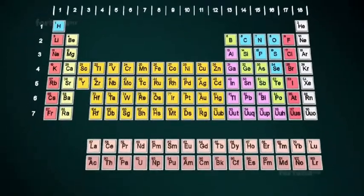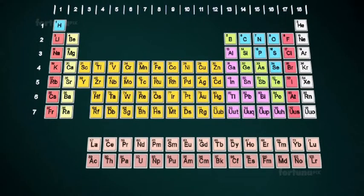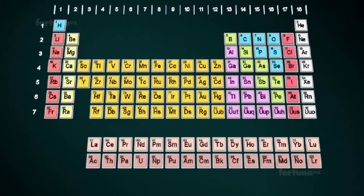The periodic table is a tabular arrangement of all known chemical elements according to their properties. The table gets its name because the arrangement of elements follows regular, repeating periods or cycles. The seven horizontal rows on the table are the periods.